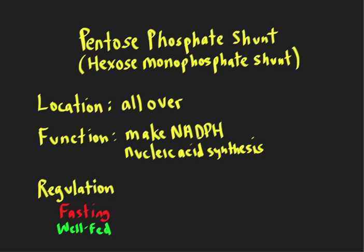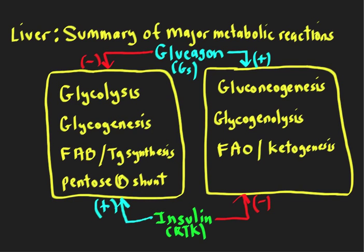Let's take a look at the big picture. We can see that the pentose phosphate shunt is in the grouping with glycolysis, glycogenesis, fatty acid synthesis, and triglyceride synthesis in the liver. When all of these are turned on in the well-fed state, when there's lots of insulin around, the other reactions in the liver — gluconeogenesis, glycogen breakdown, fatty acid oxidation, and ketogenesis — are all going to be turned off.